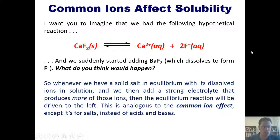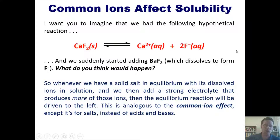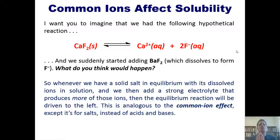Whenever we have a solid salt — such as calcium fluoride — in equilibrium with its dissolved ions, Ca²⁺ and F⁻ in solution, and we then add a strong electrolyte like barium fluoride that produces more F⁻, the equilibrium reaction will be driven to the left. This is the common ion effect — exactly like what I taught you in an earlier video, except for salts instead of acids and bases.